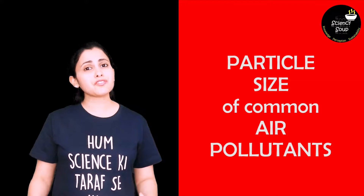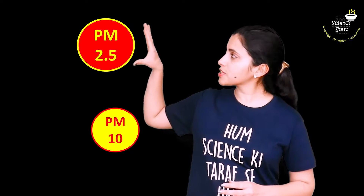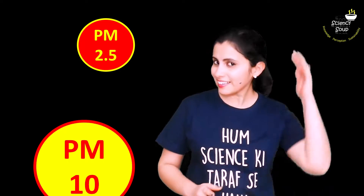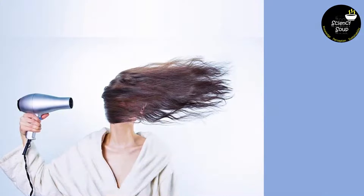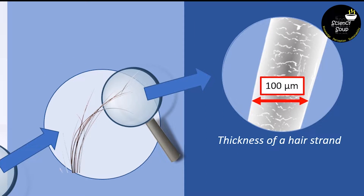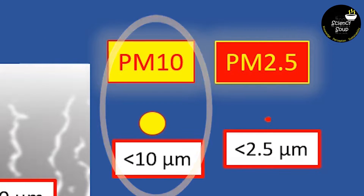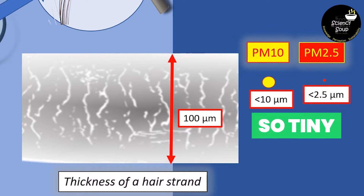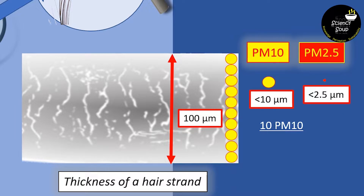There are many different types of masks and each type has a different purpose. But before I begin with the types of masks, we need to first understand the particle size of some common air pollutants. When we talk of air pollutants, we often hear the terms PM2.5 and PM10. The numbers 2.5 and 10 refer to the size of these particles. To keep things in clearer perspective, I'll make a simple comparison using hair. The thickness of a single strand of our hair is about 100 micrometres. PM10 are particles less than 10 micrometres, and PM2.5 are particles less than 2.5 micrometres. So you can imagine — these particles are so tiny that you could roughly put 10 PM10 particles or 40 PM2.5 particles on the width of your hair.